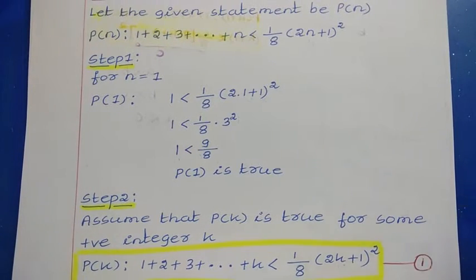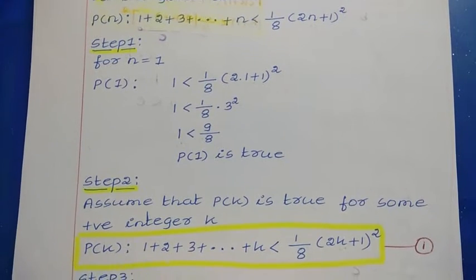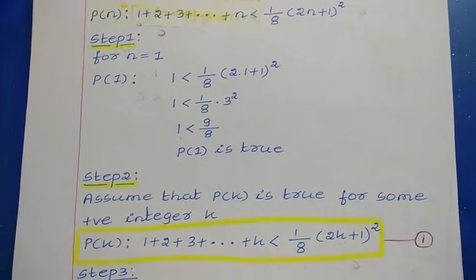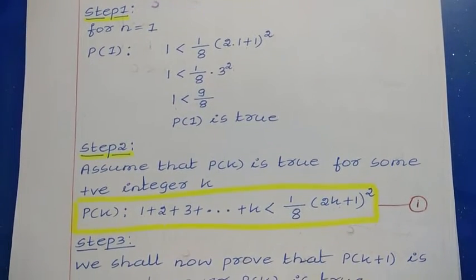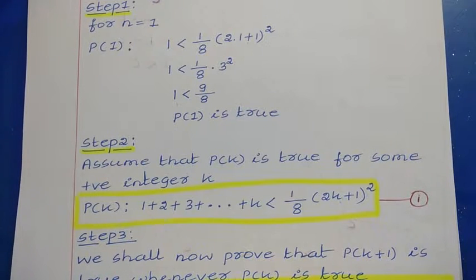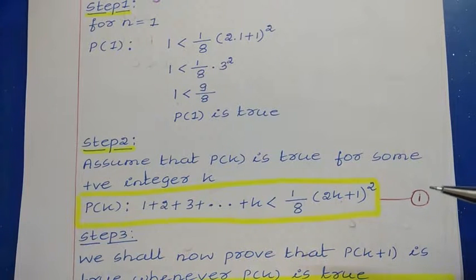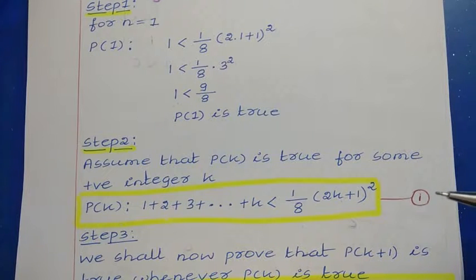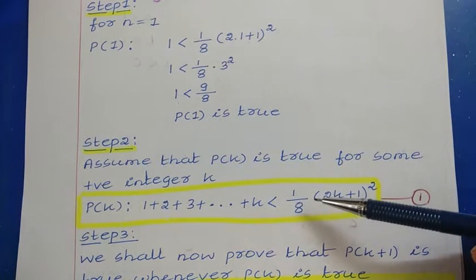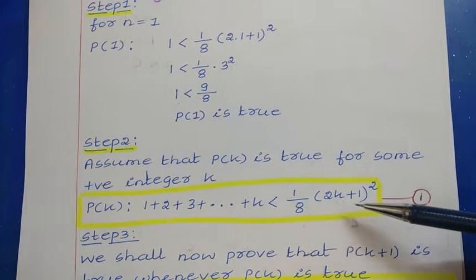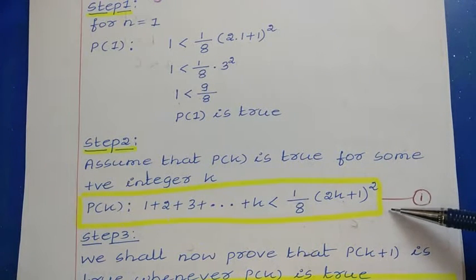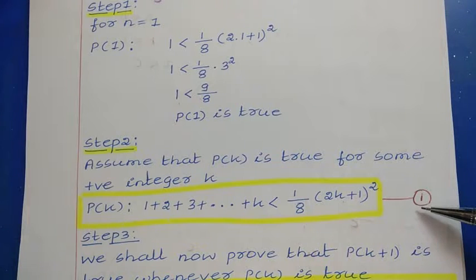As it is true for n equal to 1, the next step is assuming the statement for n equal to k. We take some positive integer k and assume that the given statement is true for that positive integer k. Replacing n with k, the P(k) statement is: 1 plus 2 plus 3 plus ... plus k, less than 1/8 into (2k+1) whole square. Let us call this statement 1.